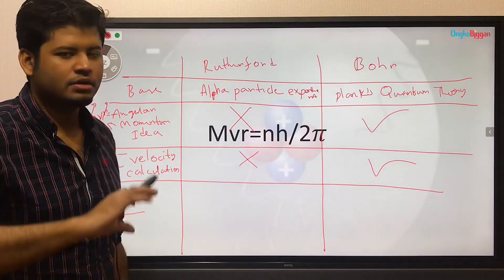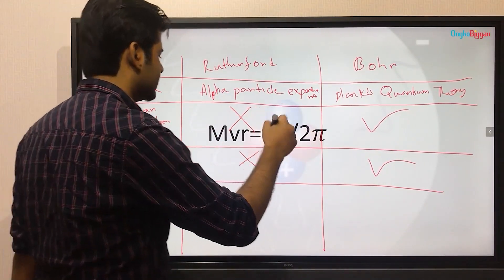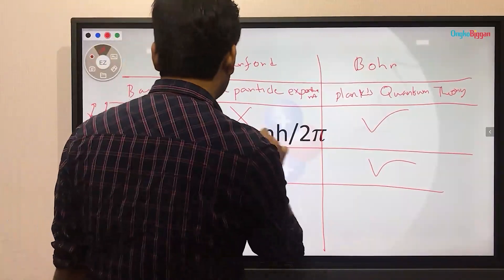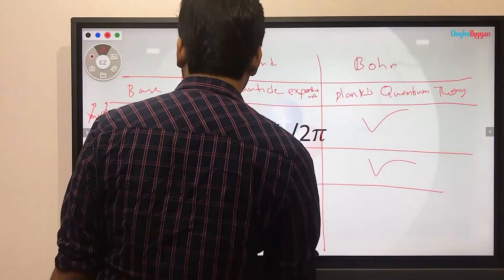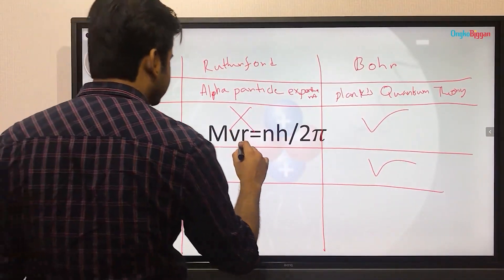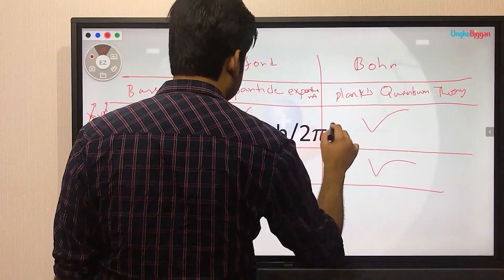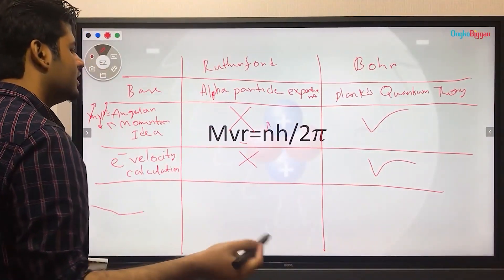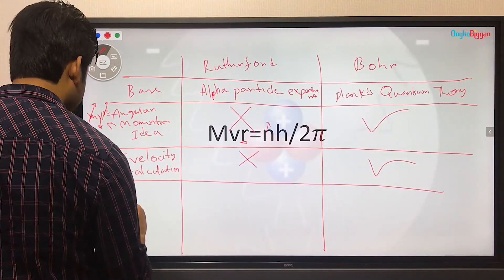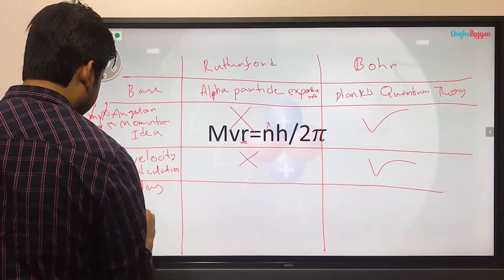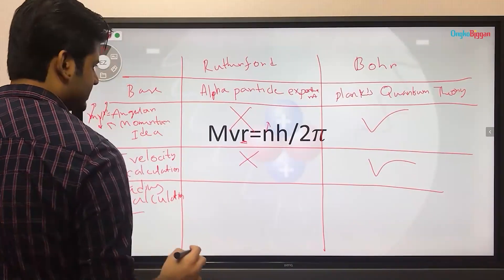So our orbital number changes and h divided by 2π is constant. So our orbital number change affects our momentum value. Our electron mass and velocity — what we need is: we need the radius, where n is the orbital number. We can calculate the orbital radius from our angular momentum equation in the Bohr model, and we need to do the radius calculation in our orbital model.